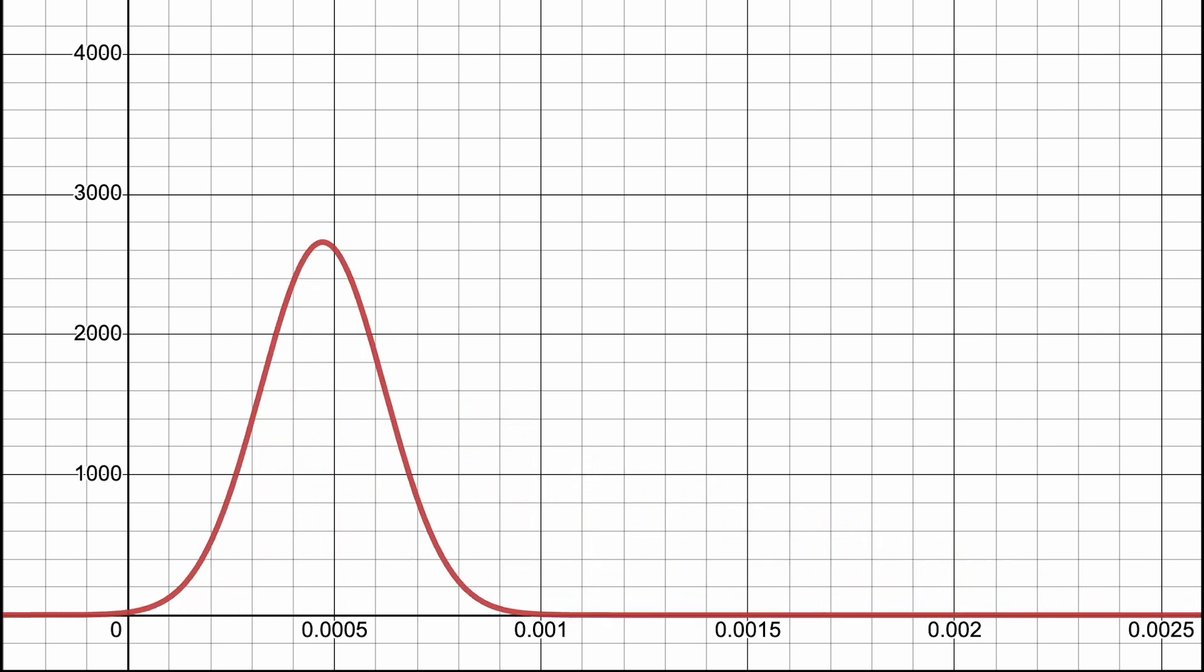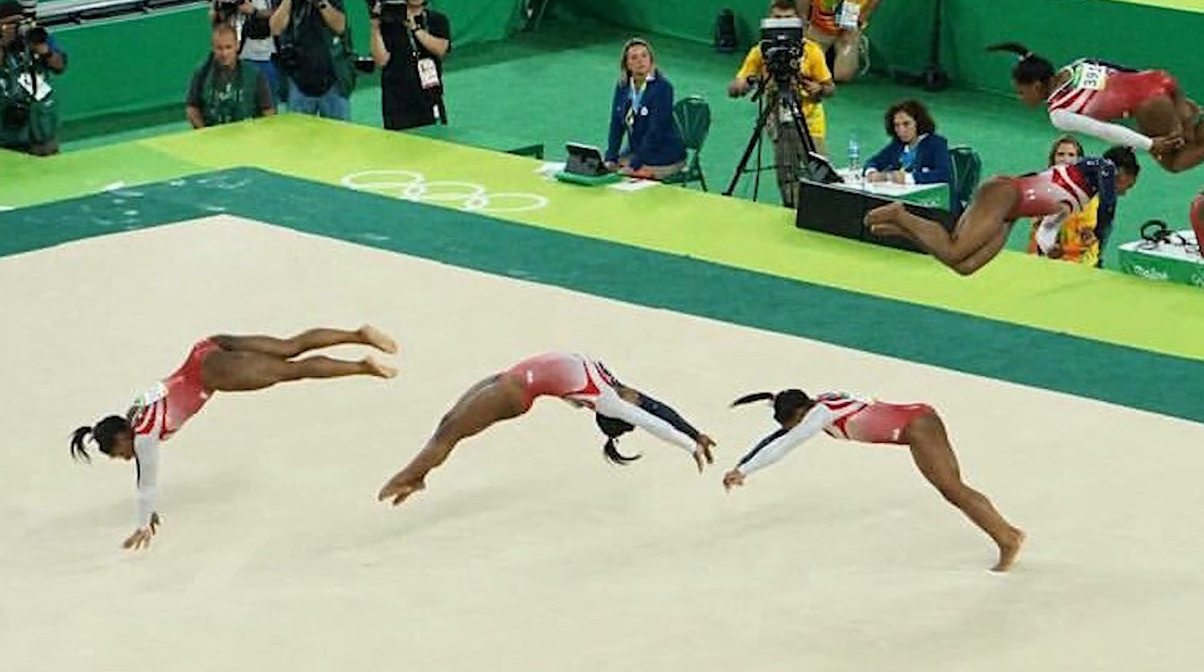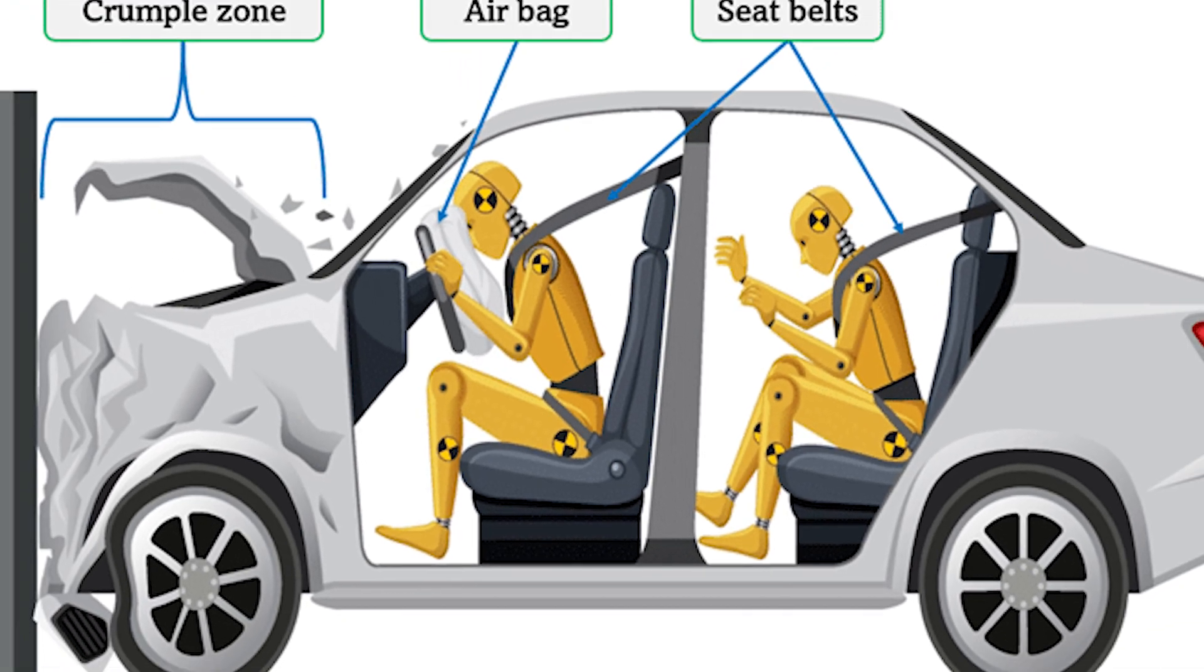This makes surviving these impacts much more likely, and this is why boxers wear gloves, gymnasts tumble on mats, batting helmets have foam pads, and cars have built-in crumple zones.